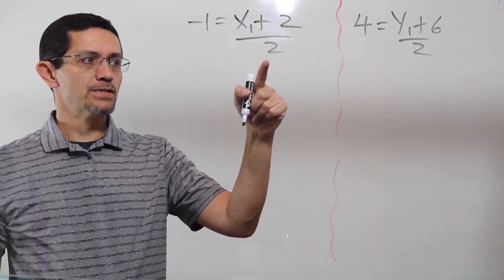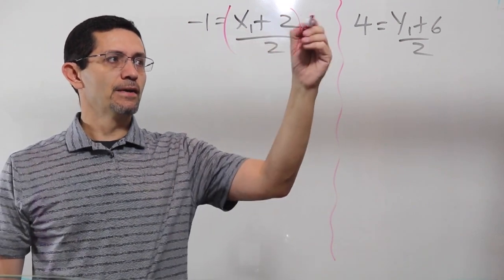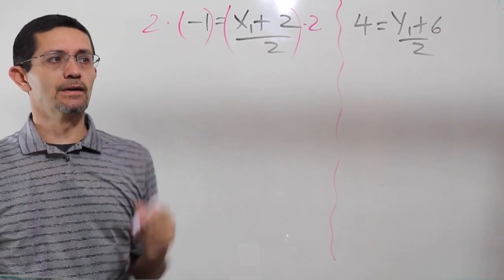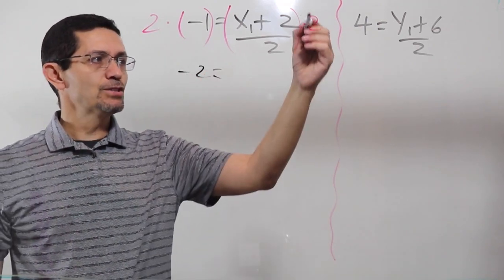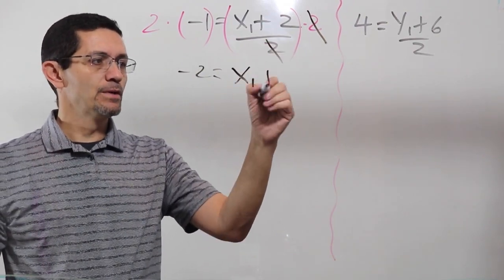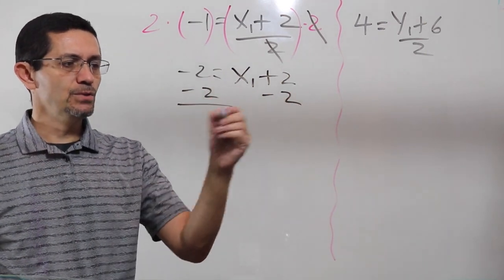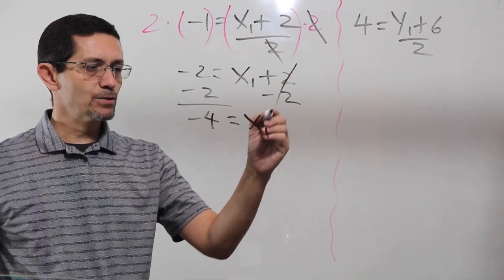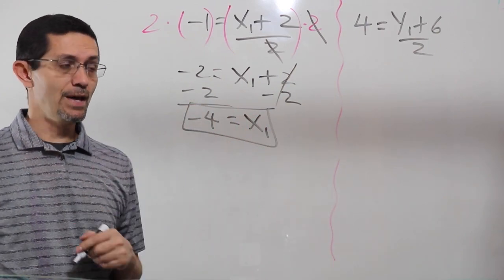From here, the first step is to get rid of the 2. So, this 2 that is divided, I've got to multiply. If I do it on one side, I do it on the other side. So, 2 times negative 1 is going to give me negative 2. This 2 cancels with the 2 that is divided, and I'll have x1 plus 2, minus 2, minus 2, and I'll have negative 4 equals x1. And this is my first coordinate of the other pair that I'm looking for, the other endpoint.